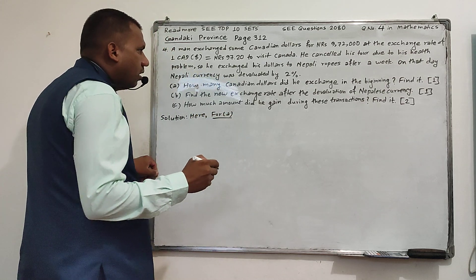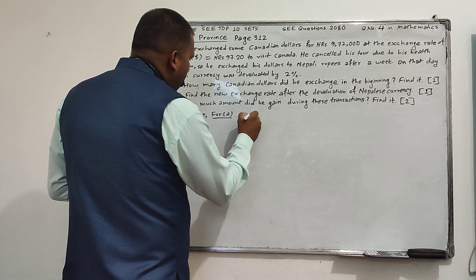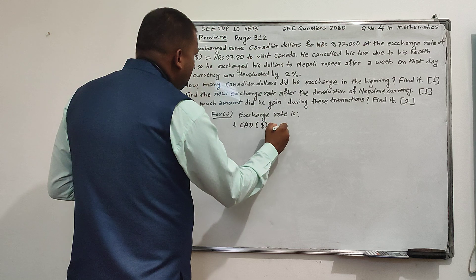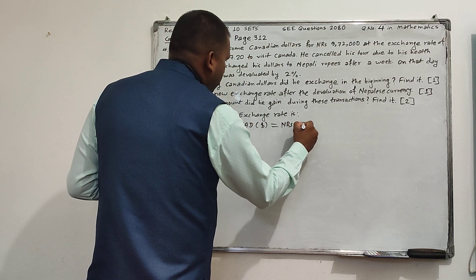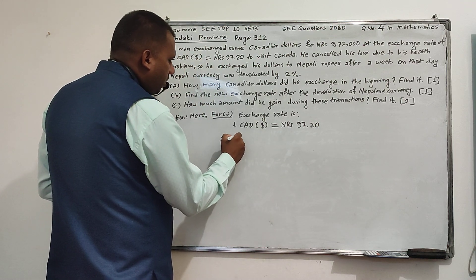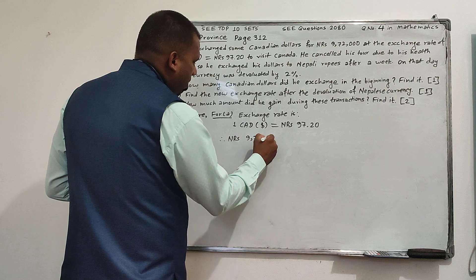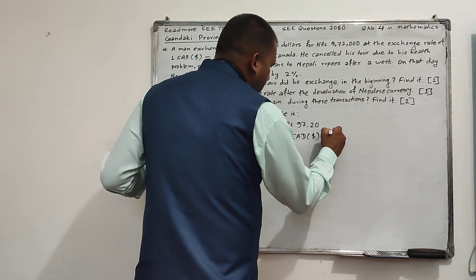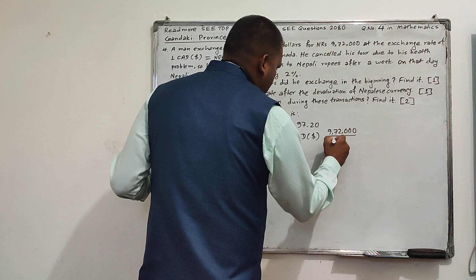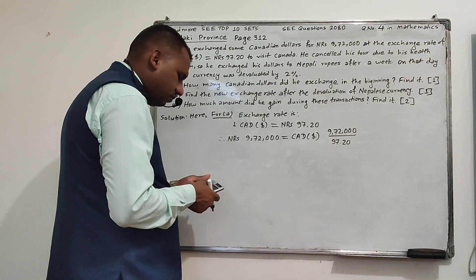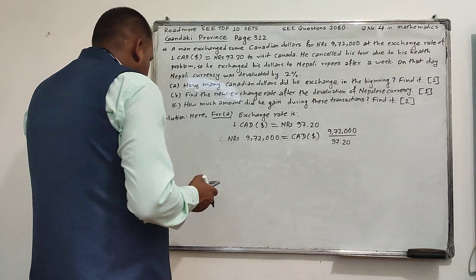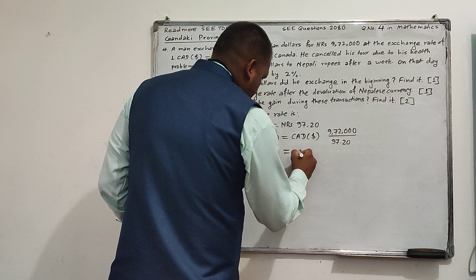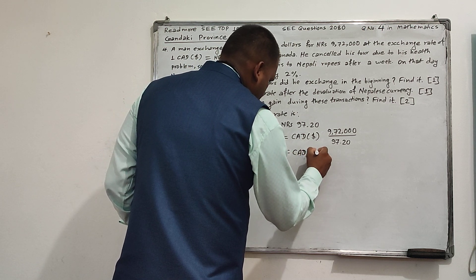For part A: the exchange rate is one Canadian dollar equals NRS 97.20. Therefore, NRS 972,000 equals some Canadian dollars. So, 972,000 divided by 97.20, dividing this by calculator, it becomes 10,000. So, this is equal to 10,000 Canadian dollars.